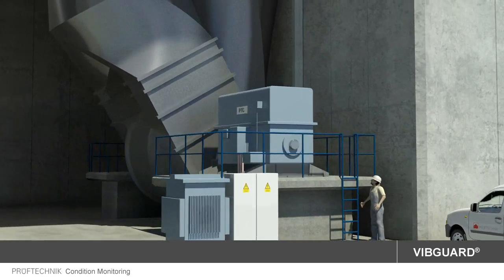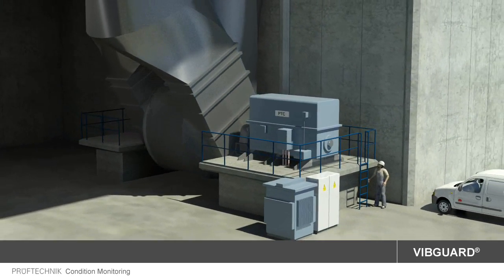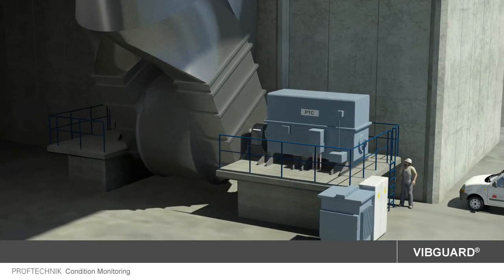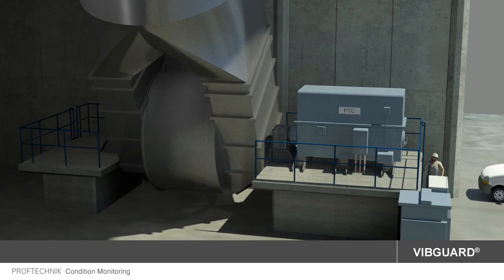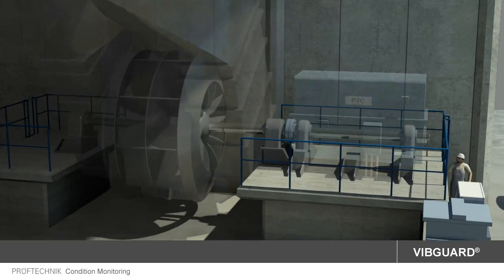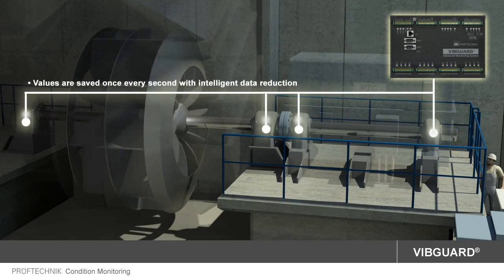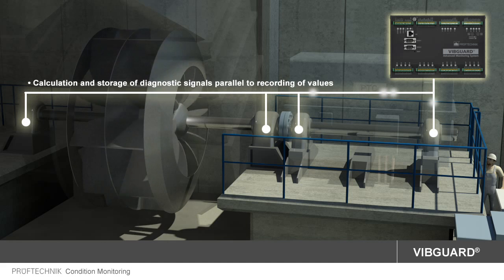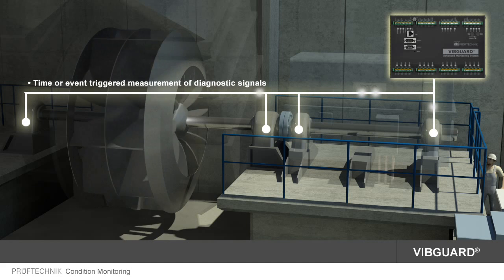Based on the example of a large process fan, we would like to demonstrate the diverse functions of WIBGARD. The motor and fan shaft are monitored at four measurement locations. Overall values are recorded seamlessly and synchronously and are stored every second. Due to intelligent data reduction, only significant changes are saved in order to keep the data volume within a manageable level. At the same time, frequency-selective information from all channels, such as the FFT spectrum or the envelope spectrum, are calculated and saved.